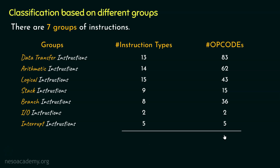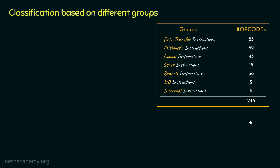Adding all these up, there are 66 different instruction types, and in the 8085 there are 246 op codes total across all seven groups. In this chapter we are going to cover the data transfer, arithmetic, and logical instruction groups. The remaining groups will be covered in later chapters. That is the classification based on different groups.